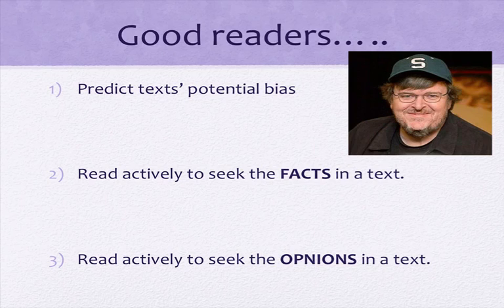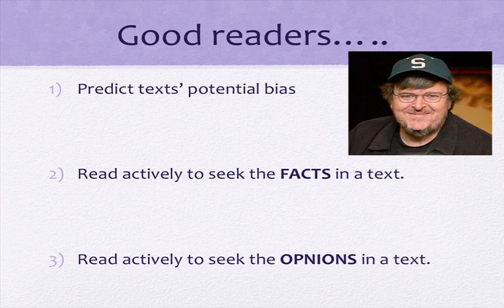So here's what good readers and consumers of information do. We look at a text and start to predict what is that text's bias. We know that certain authors or creators support different things — so if we know we are watching a film by Michael Moore, we know his bias: he's going to be on the liberal end of the spectrum, critical of the conservative side. From there, we have to look for the facts in a text and separate those from the opinions of the author, because we can still learn from a biased source.